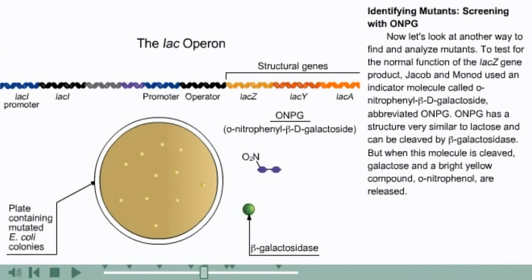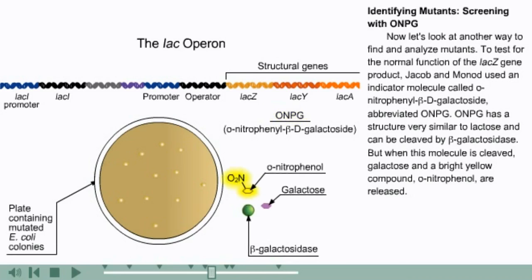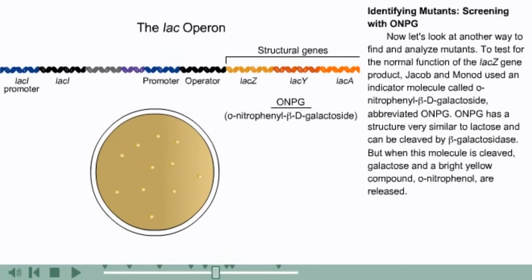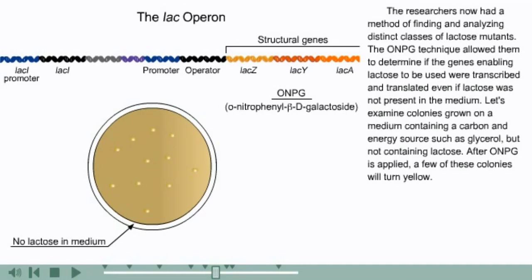Now let's look at another way to find and analyze mutants. To test for the normal function of the lacZ gene product, Jacob and Monod used an indicator molecule called O-nitrophenol-beta-D-galactoside, abbreviated ONPG. ONPG has a structure very similar to lactose and can be cleaved by beta-galactosidase. But when this molecule is cleaved, galactose and a bright yellow compound, O-nitrophenol, are released.